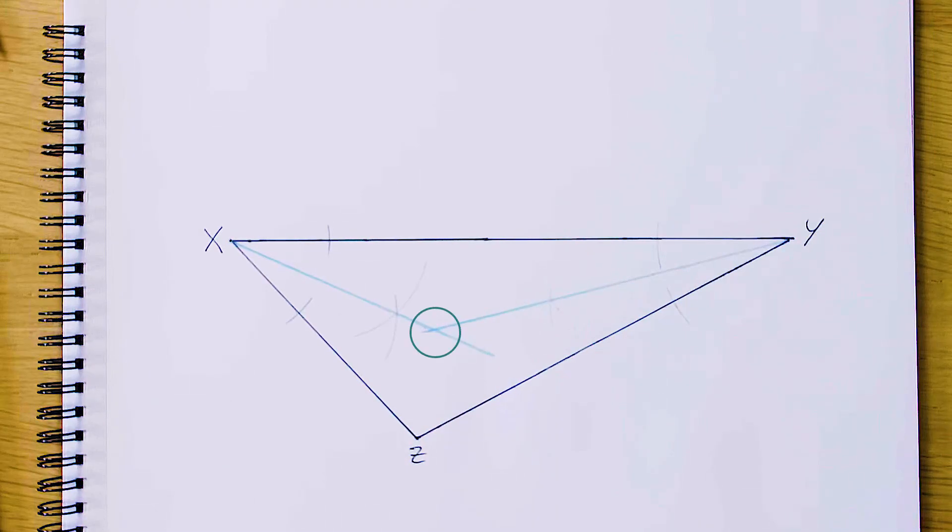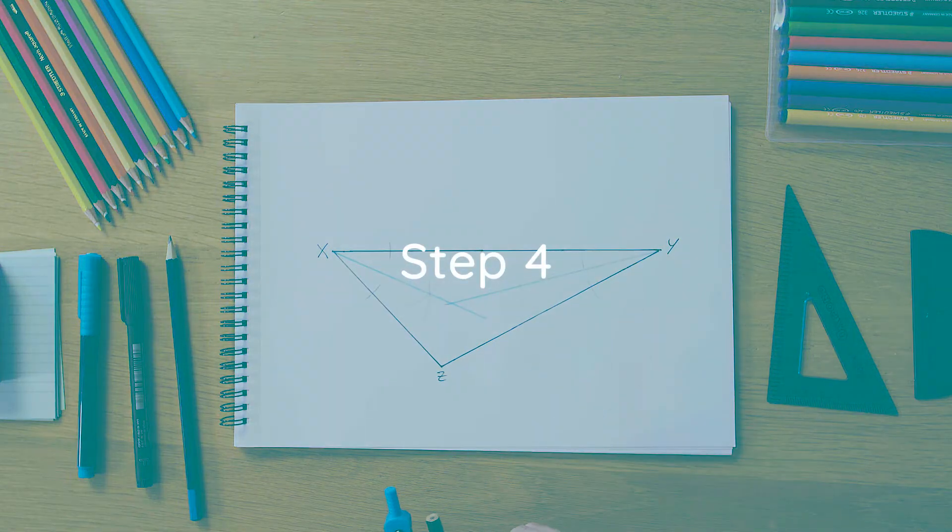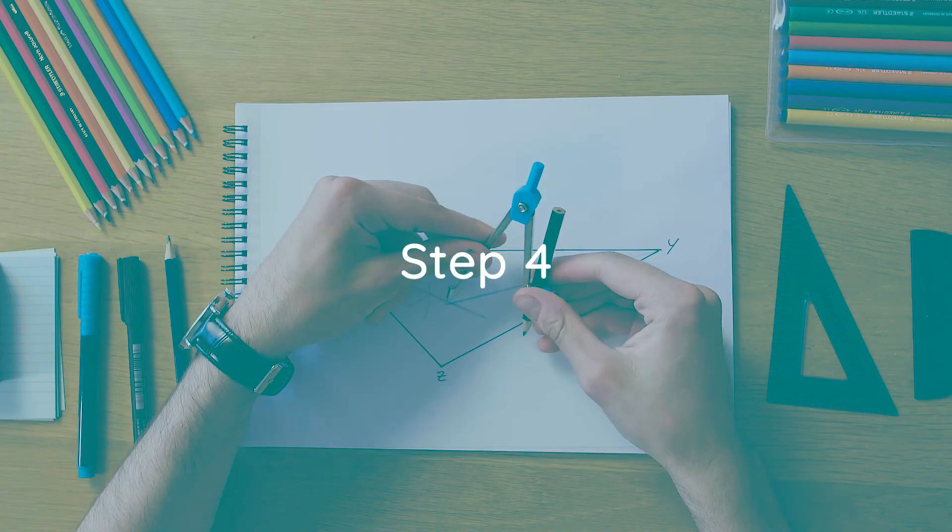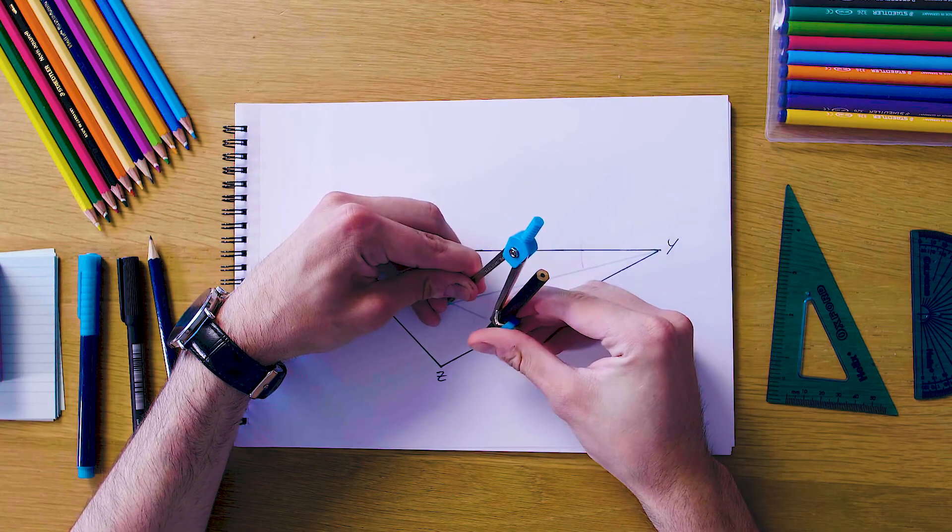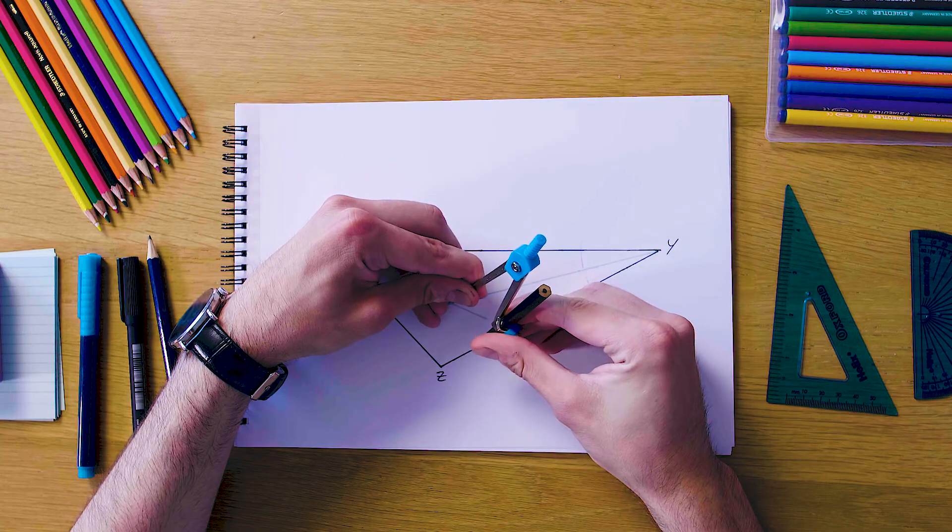And so this is our incenter now. Our final step to get our incircle is going to be to use our compass distance to be the shortest possible distance from each side so that it barely touches each side and is completely contained within the triangle.